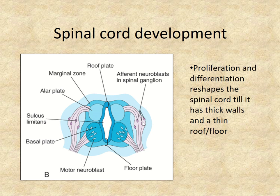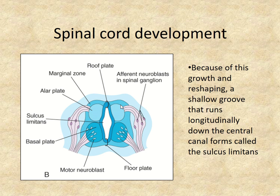So we have that tube with the three layers, and now we're going to have growth as the spinal cord grows. It's going to reshape the tube to where it has really thick walls and a really thin roof and a really thin floor. Because of the growth of neurons in the intermediate zone and the reshaping of the tube, we see a shallow groove that shows up between the two larger condensations of neurons, and we call this groove the sulcus limitans.